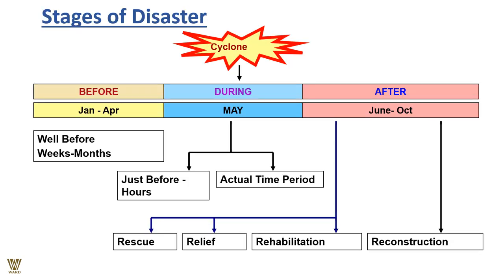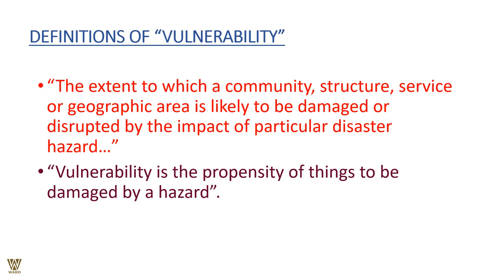So we have before, during, and after the event. Well before — weeks or months — if we can plan it out, nothing like it. But in all probability the chances of planning might not be there at all; it might happen suddenly. During the event — just before or at the actual time — we can plan for relief, rescue, rehabilitation, and reconstruction. Remember, rehabilitation and reconstruction can also be done post-event, after the impact.